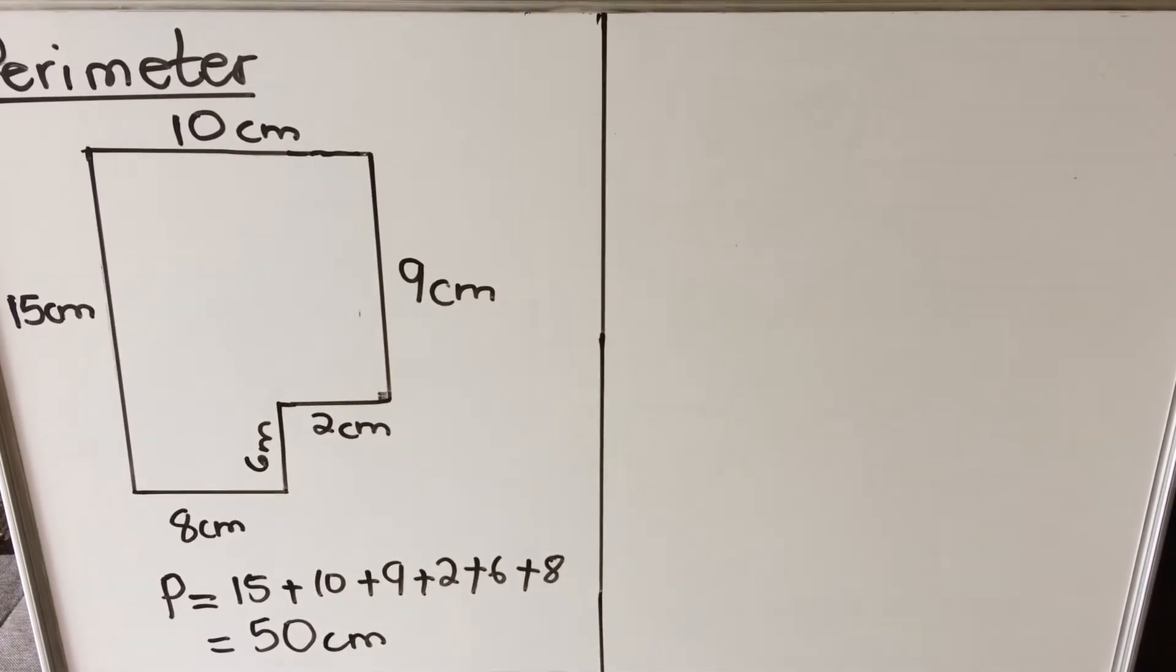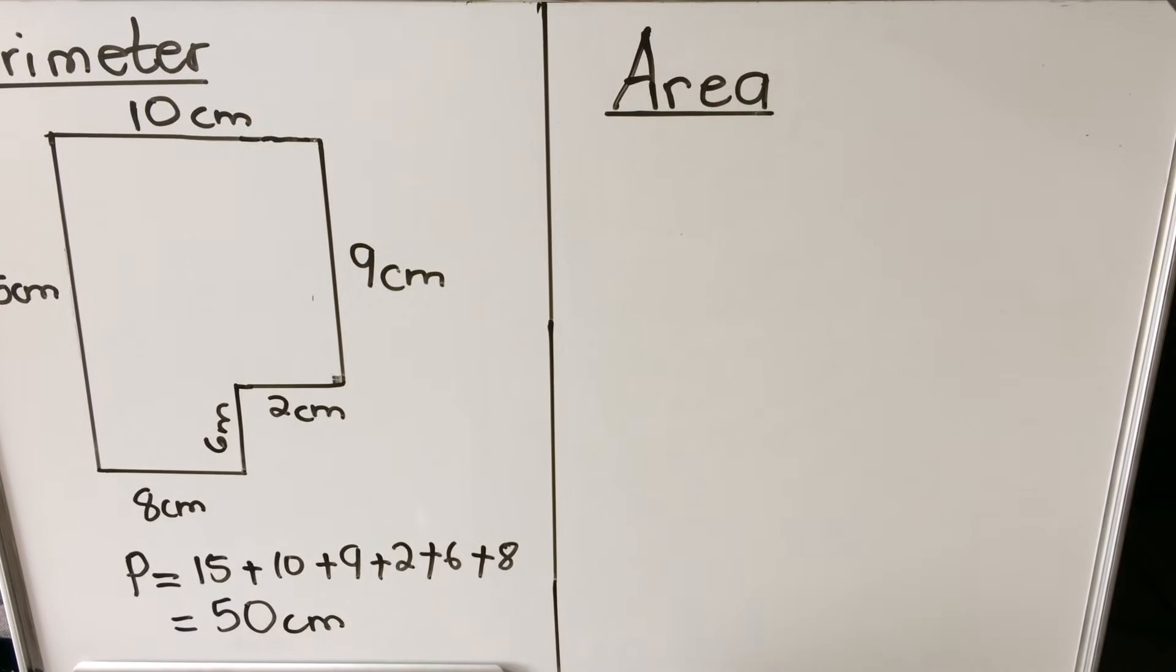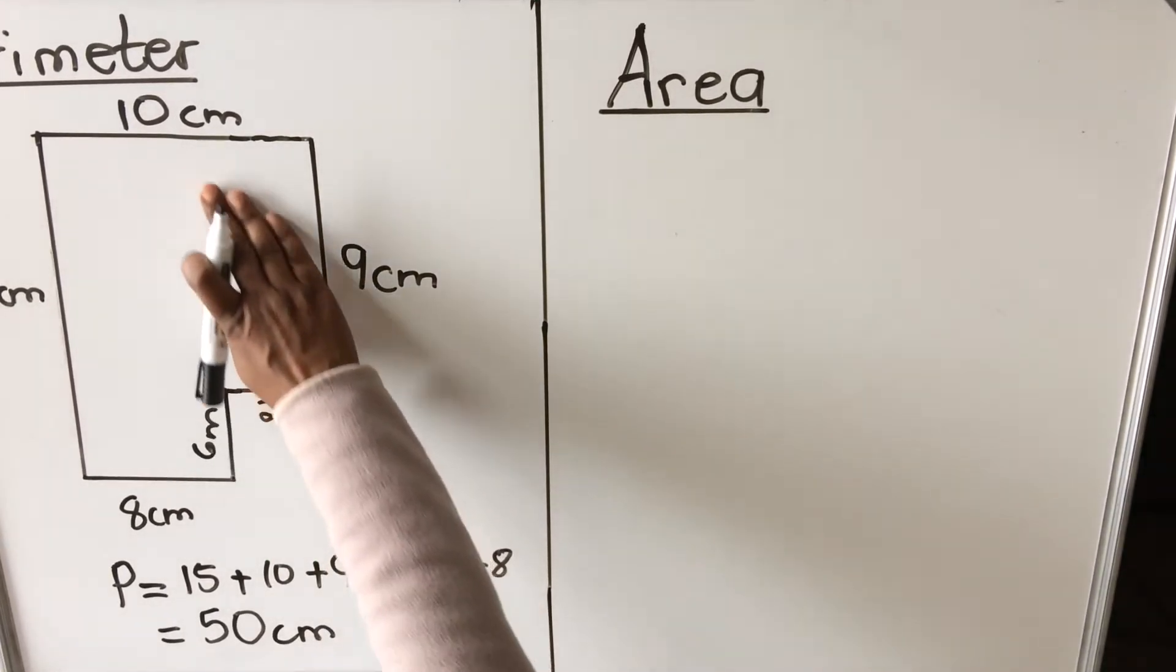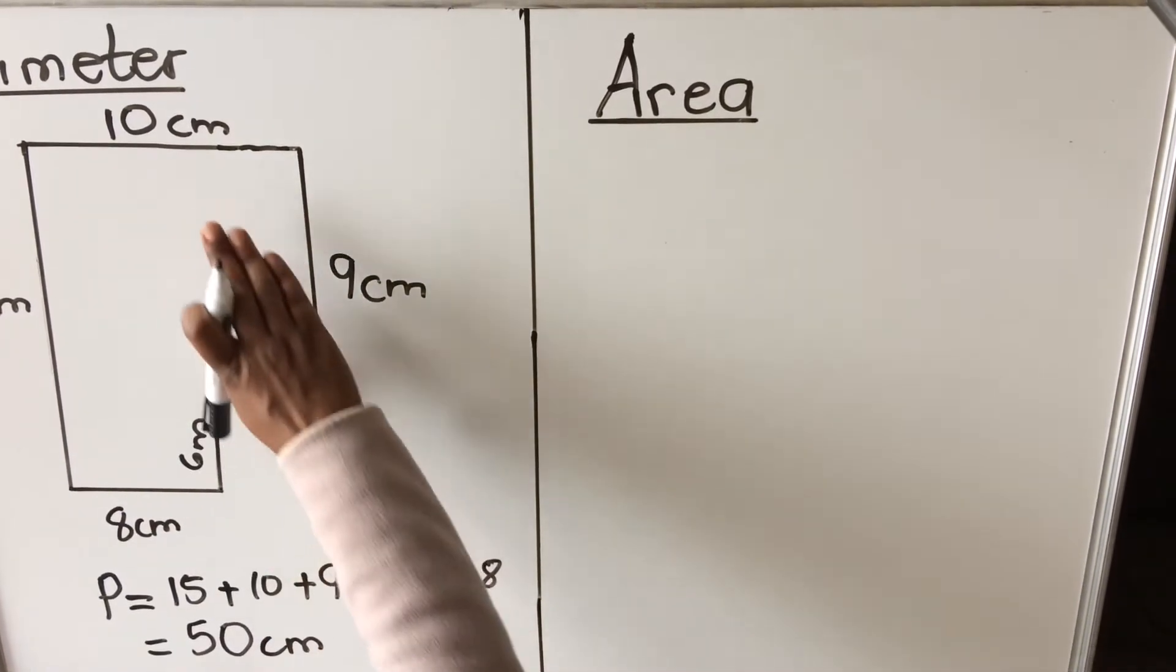Let's look at how you calculate the area of irregular shapes. When we calculate the area of the irregular shape, the area is the space that is covered by the shape, so all the space here.